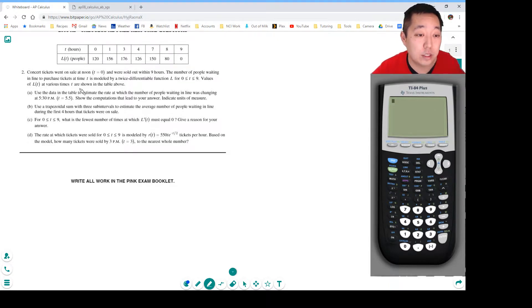Concert tickets went on sale at noon, T equals zero, and were sold out within nine hours. The number of people waiting in line to purchase tickets at time T is modeled by a twice differentiable function L. Values of L at different times are shown in the table.